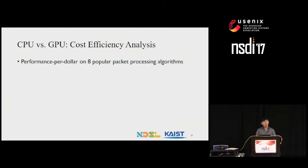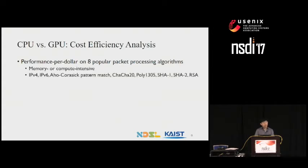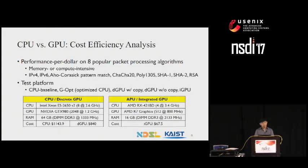Now let's look at how these differences are reflected in real-world network applications. For a fair comparison, we look at the processor-level cost-effectiveness of packet processing algorithms in terms of performance per dollar value, since it is difficult to compare only performance when each platform has different hardware sophistication and cost. We carry out the cost-efficiency analysis on eight popular memory or compute-intensive packet processing algorithms, tested on five different platforms: CPU baseline, GOPT as optimized CPU, discrete GPU with and without DMA transfer, and integrated GPU. Below is the machine setup and price used for each platform.